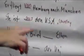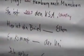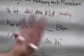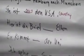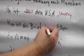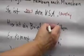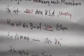Hier ist dein Brief ___ Ellen — here is a letter from Ellen. Ellen is a person, obviously, so what do we put in? Von. That's right.